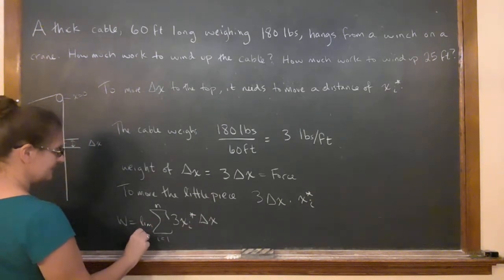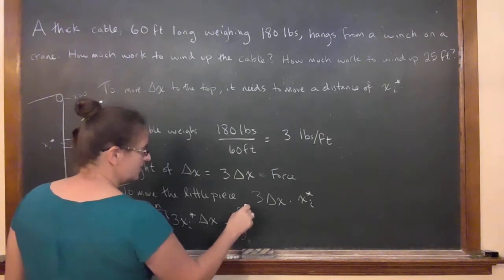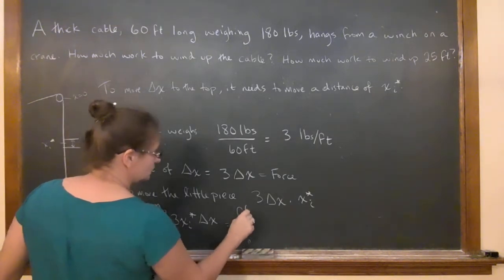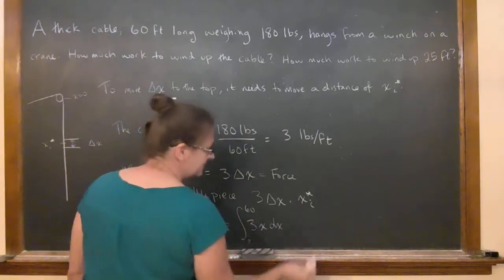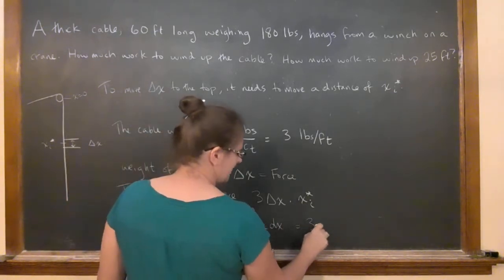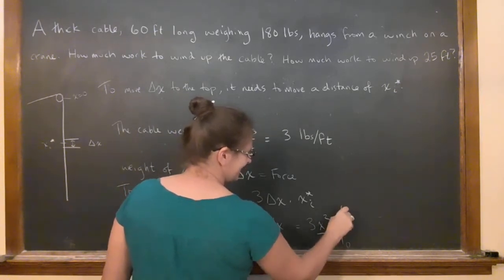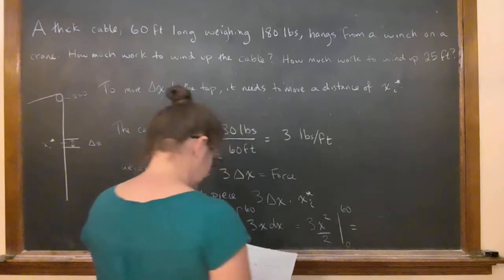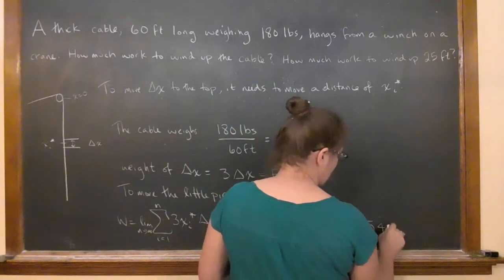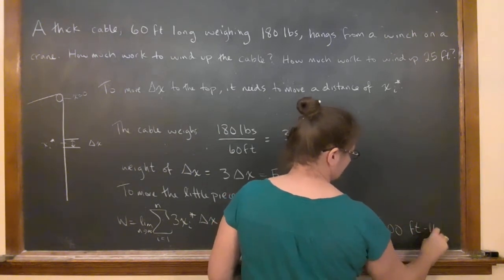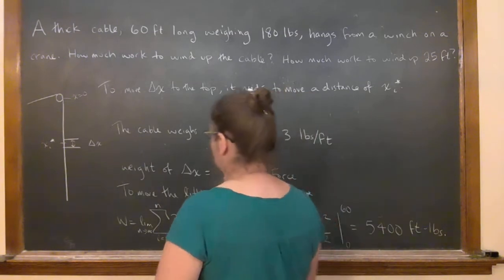Of course, I take n to infinity, and this becomes a nice integral, 0 to 60, the total amount of the cable, 3x dx. That's easy enough. I get 3x squared over 2 from 0 to 60, and this guy ends up being 5,400 foot pounds. So that's the amount of work to do the whole thing.